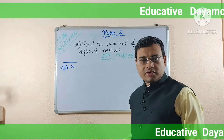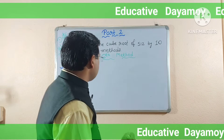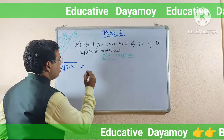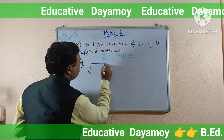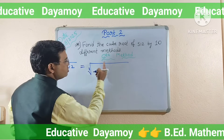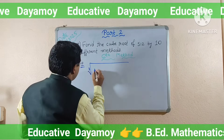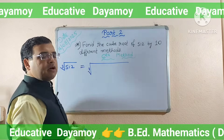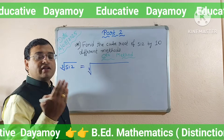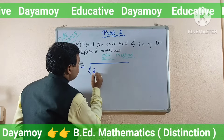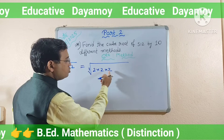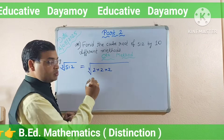Here, cube root of 512 is given. You have to write the cube root symbol with 3 inside. Now, when we do prime factorization of 512, you get nine 2s — meaning 2 multiplied nine times. So you have got here nine 2s.